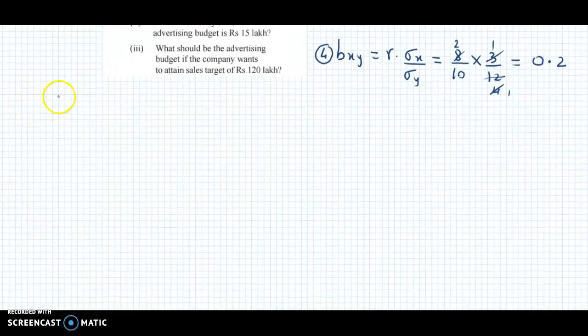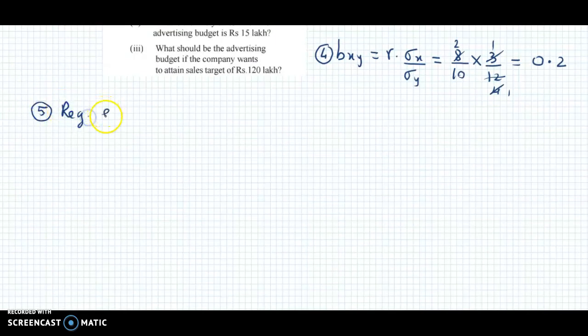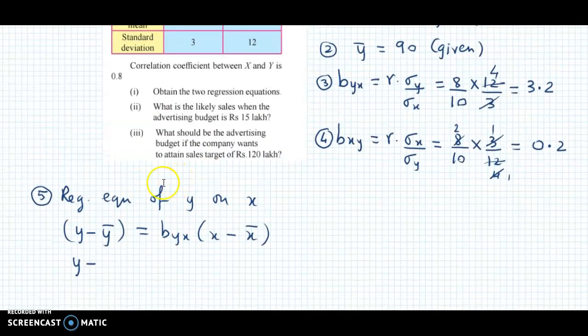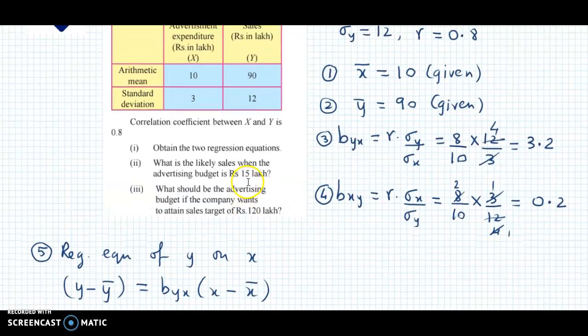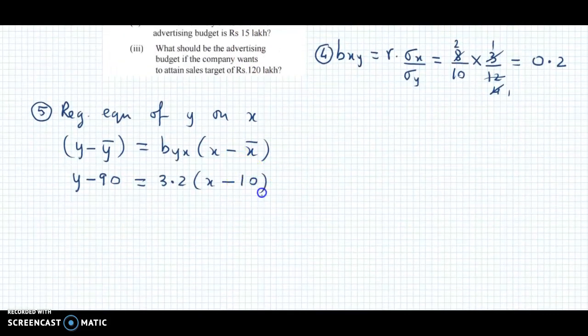Now we can easily look at regression equations. Step number five: we have regression equation of y on x, which is given by (y - ȳ) = byx(x - x̄). So here, y - ȳ, now ȳ value is 90, so we write 90 over here.